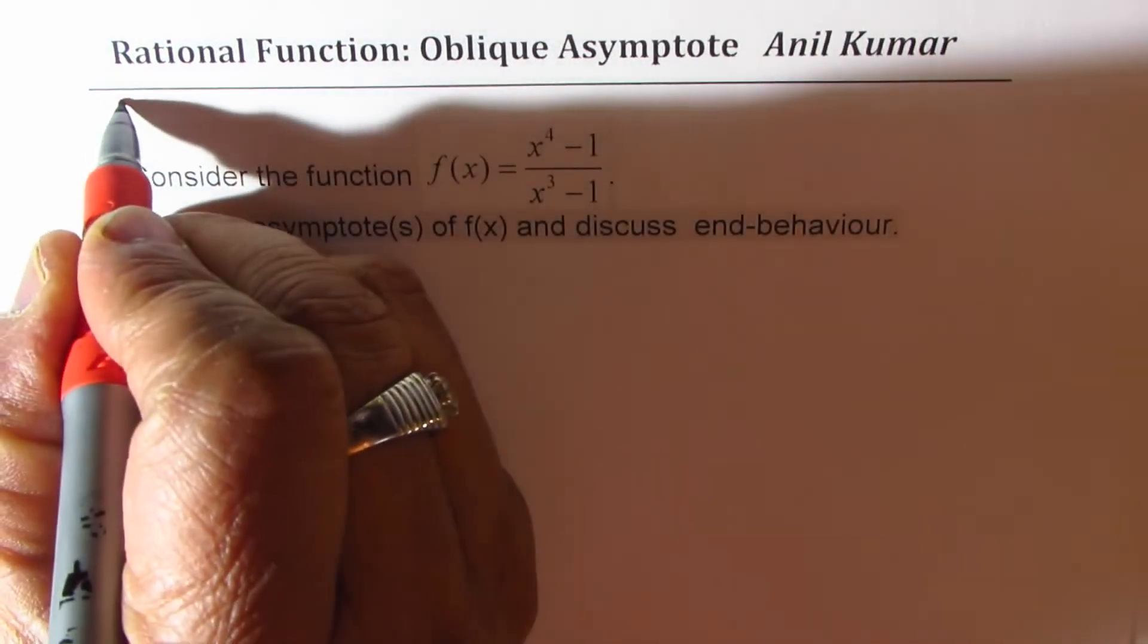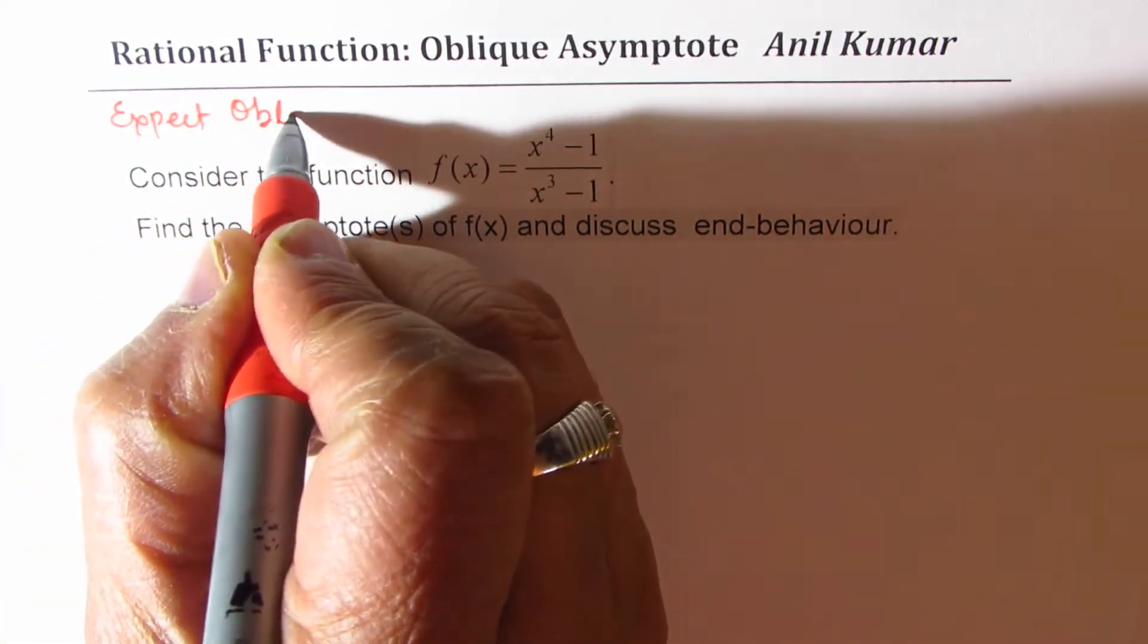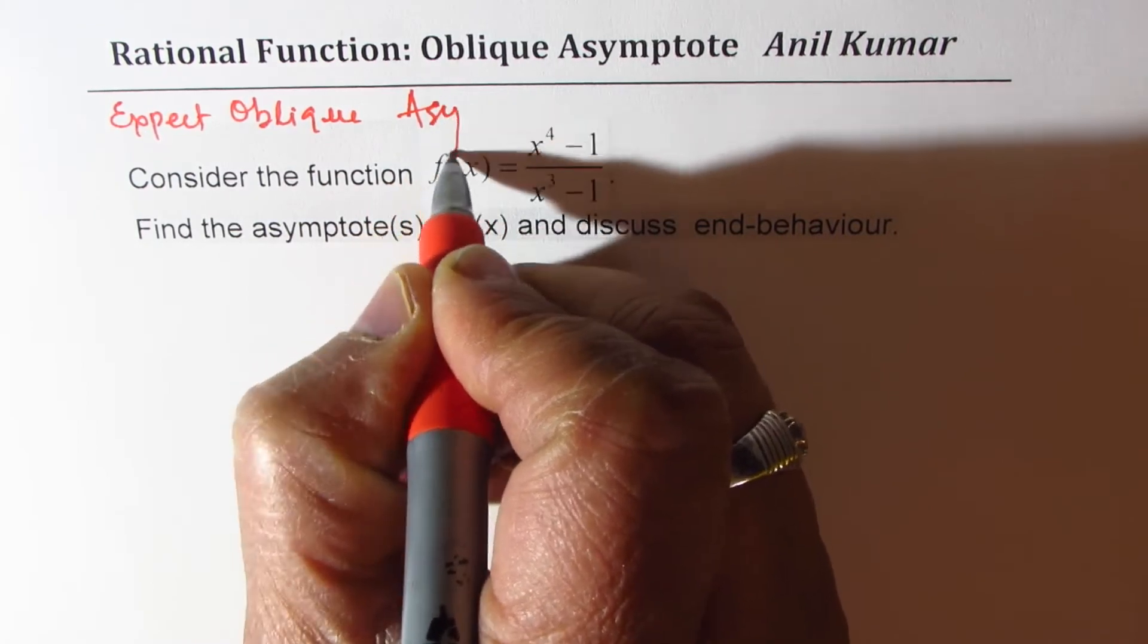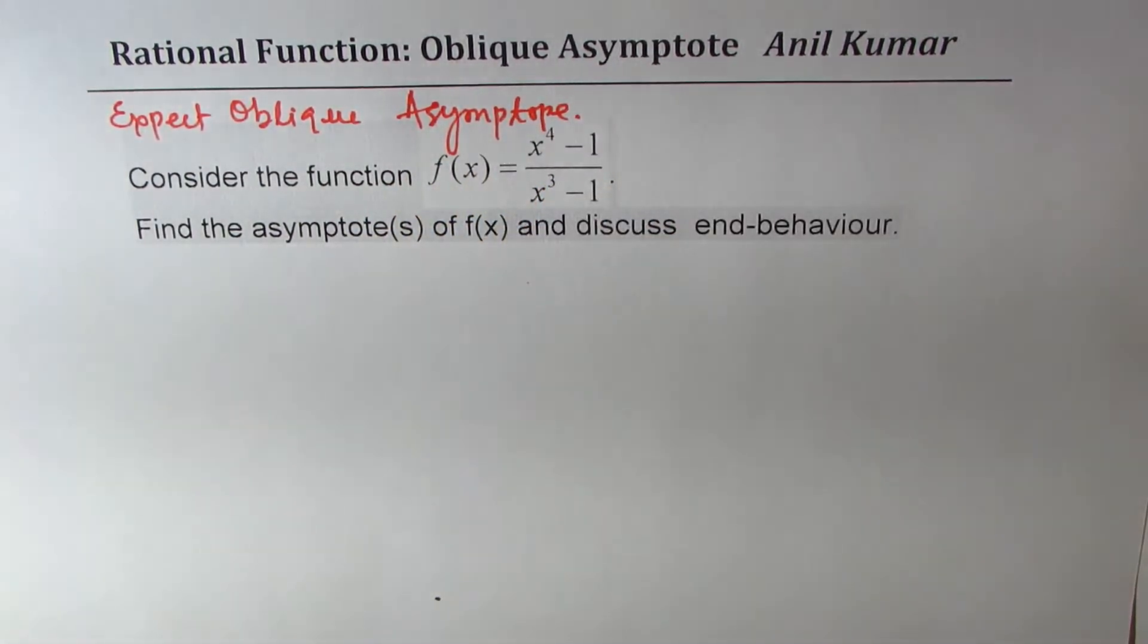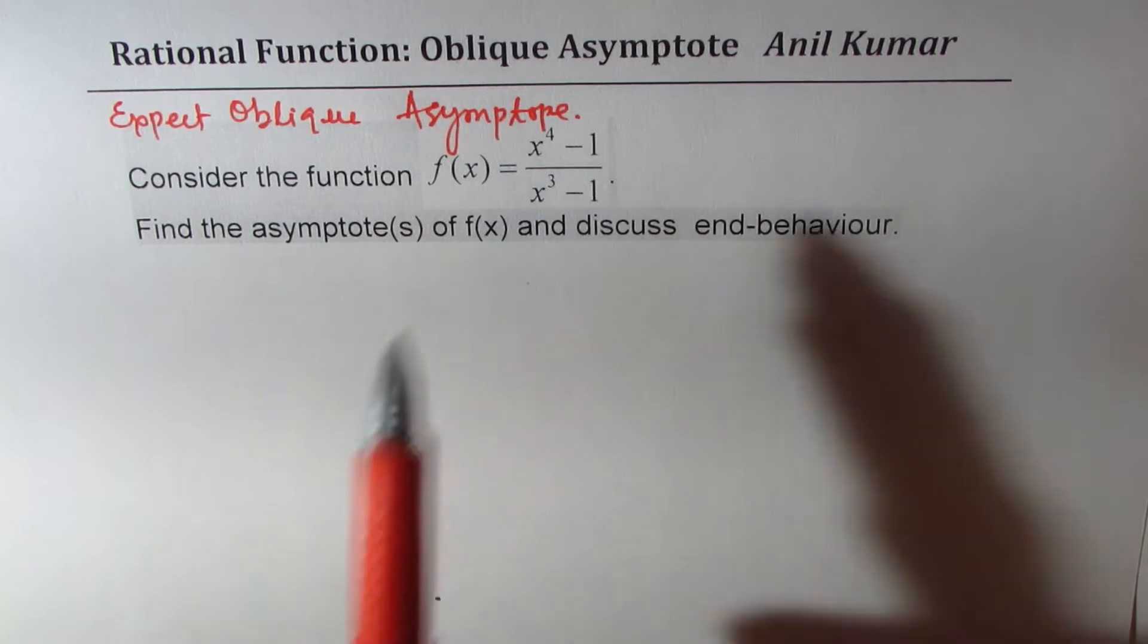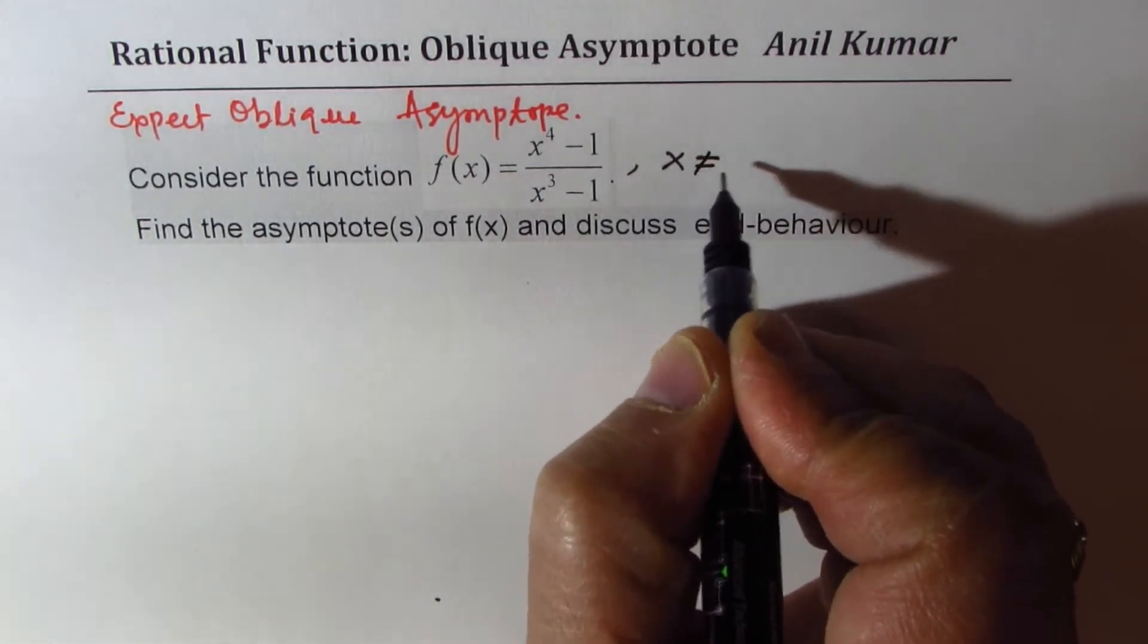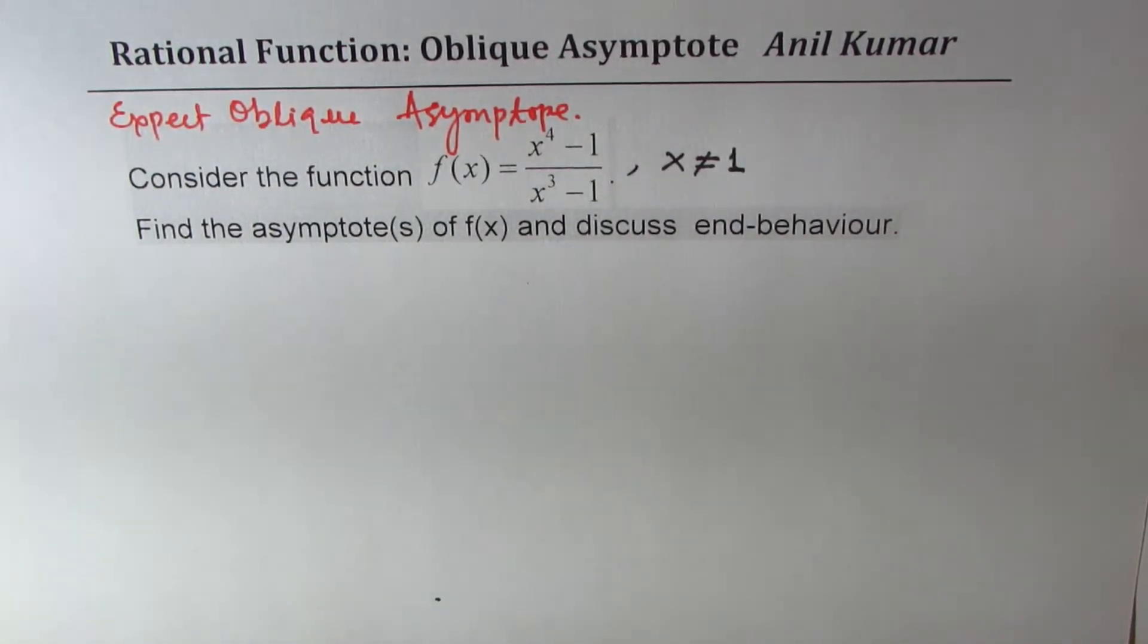So, as I was saying, we expect oblique asymptote. Second, we also know that the denominator could be zero for x equals 1, right? So clearly, in this particular equation, we have a restriction that x is not equal to 1. That could give us zero in the denominator.